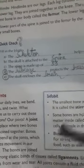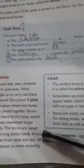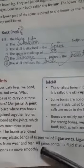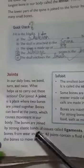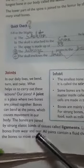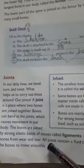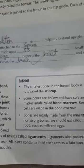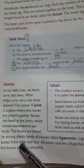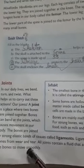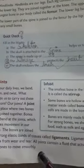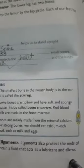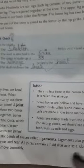If joints were not there, we could not move our hands, legs, head, or anything. The bones are joined by strong elastic bands of tissue called ligaments. These ligaments also protect the ends of bones from wear and tear.